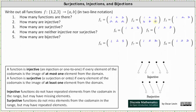For function three, let's let one output be a and two outputs be b: one maps to a, two maps to b, and three maps to b. For function four, let's let one map to b, two map to a, and three map to b. And for function five, let's let one map to b, two map to b, and three map to a.